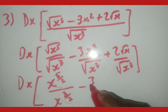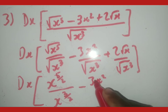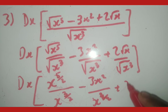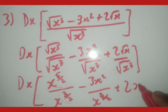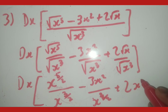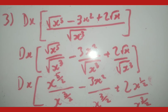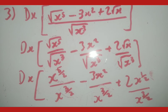For the middle term we have 3x squared over x to the power of 3 over 2. For the last term, we have 2 times x to the power of 1 over 2 over x to the power of 3 over 2 — because there's an invisible exponent of 1 and an invisible 2 outside. We keep these dx because we're not deriving yet.